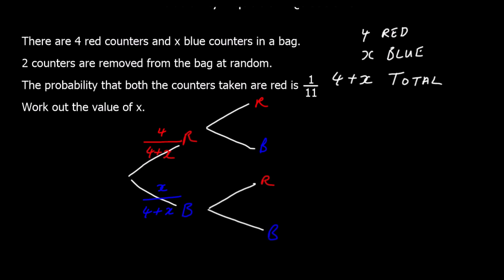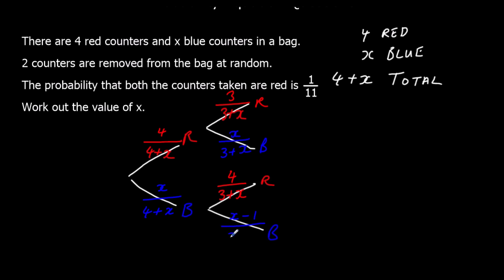If we remove a red counter, there are now 3 reds and (4 + x − 1) = (3 + x) total, so the probability of red next is 3 over (3 + x) and blue is x over (3 + x). If we remove a blue counter first, there are still 4 reds but one less total, giving 4 over (3 + x), and one less blue gives (x − 1) over (3 + x).